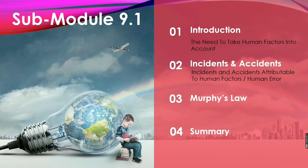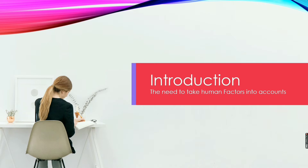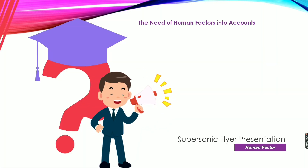We will cover Module 9.1 — first, the introduction on the need to take human factors into account; second, incidents and accidents and the differences between them attributable to human factors and human error; then Murphy's Law; and finally a summary of all these sub-modules covered in this video.